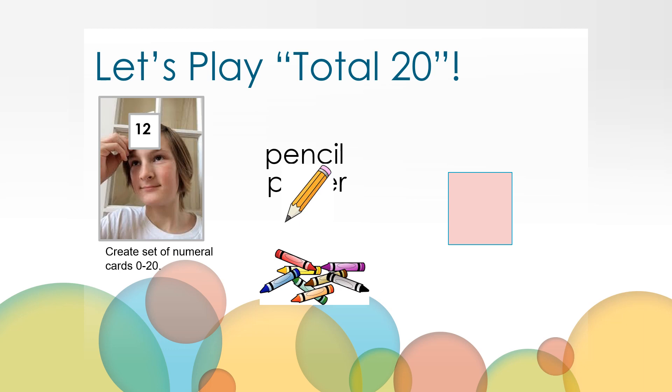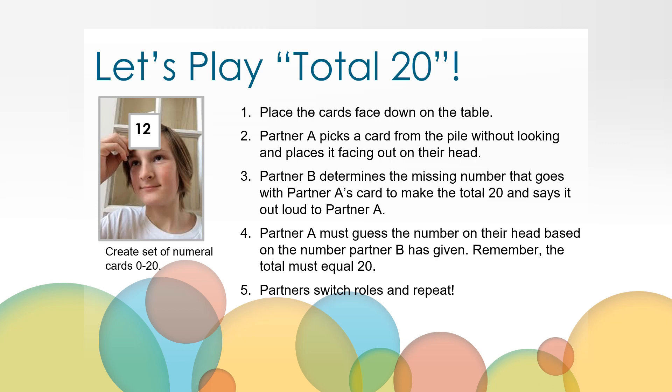Knowing related addition and subtraction facts can help you solve problems you don't know. Here's a game you can play at home to help you practice using related facts. All you will need is some paper and something to write with to help you make this game. If you have dark colored paper or construction paper, that would be best so you can't see the numbers through the cards that you make. Once you have your materials, you will need to create a set of number cards with the numbers 0, 1, 2, 3, all the way up to 20. Remember, you want to only put one number on each card. Once you have made your set of cards, here's how you play the game Total 20.